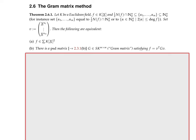Let k be a Euclidean field — a field where squares form an order and that's the unique order. In particular, k could be a real closed field or even the real numbers. Let f be a polynomial in several variables over k. The aim is to test whether f is a sum of squares of polynomials, and the tool will be so-called Gram matrices.